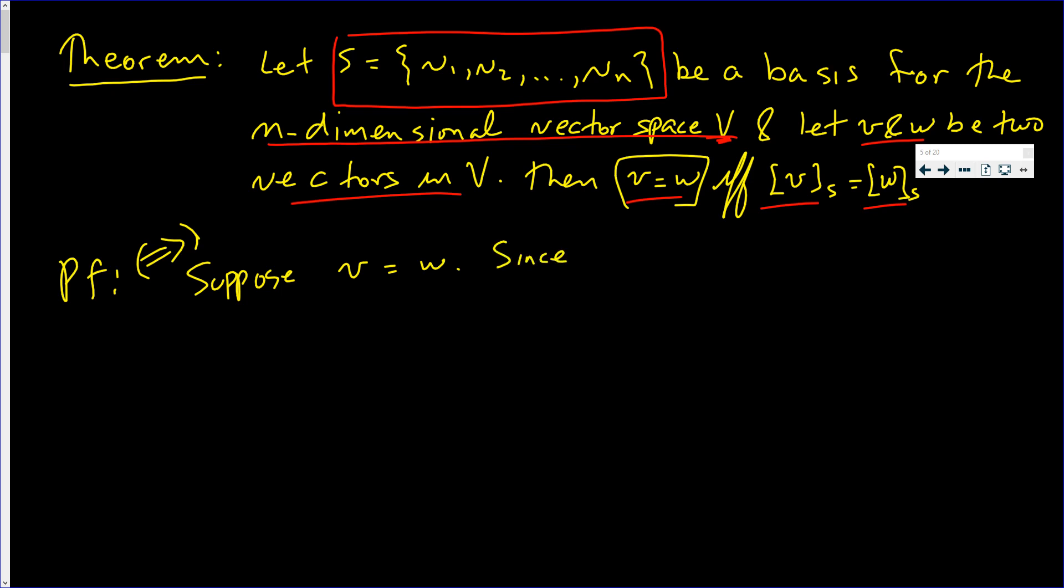Since S is our basis for V and little v and little w are in V, there exists c1 up to cn such that little v is equal to c1